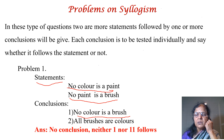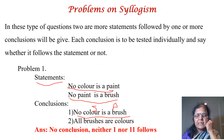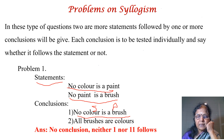The first step is to find the subject and predicate of the conclusion. Color is the subject and brush is the predicate. Which statements contain color and brush? They are not present in a single statement — color is in the first and brush is in the second. That means the subject and predicate of the conclusion are present in two different statements.